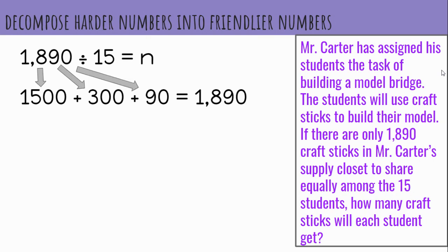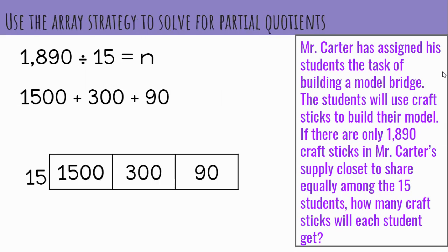So now we can see how we decompose 1,890 into 3 friendly parts, and we place them in the array and divide. 15 goes into 1500, 100 times, 15 goes into 300, 20 times, and 15 goes into 90, 6 times.